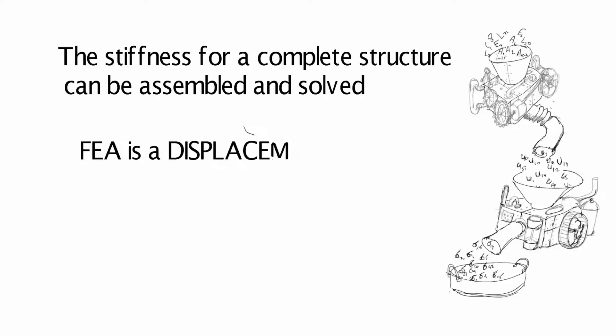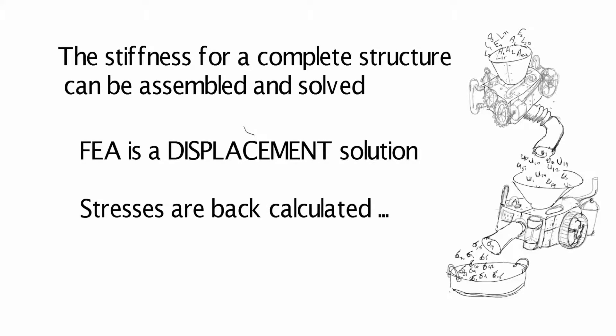A key point here is that we fundamentally solve for displacements. We then back substitute and solve for the stresses. These are back calculated in the two-step process. Approximations and errors can creep into the stress calculations because of this. This is a major weakness in the FEA method. We'll explore that in later videos.